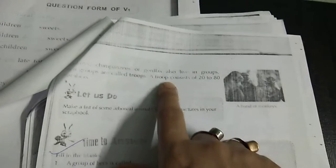Monkeys, chimpanzees or gorillas also live in group. Their group is known as troop. A troop consists of 20 to 80 members. So these are all groups name.